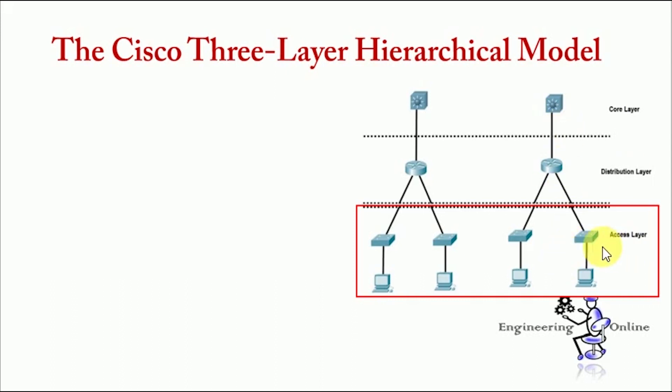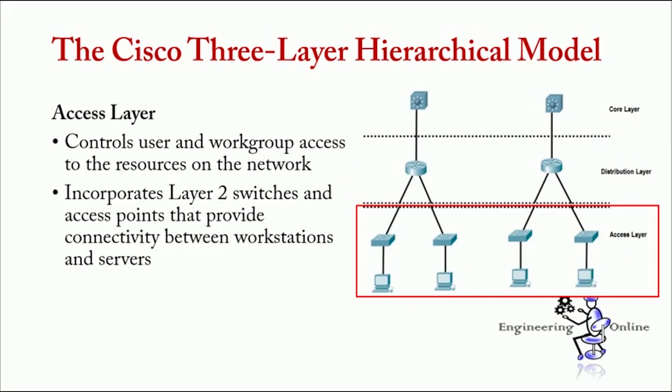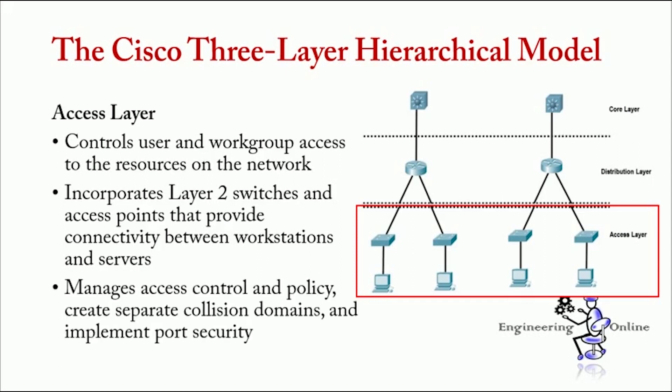There are 3 layers. First one is access layer, then distribution layer, and then core layer. First, we will discuss the access layer. Access layer controls user and workgroup access to the resources on the network. This layer usually incorporates layer-two switches, and access point that provide connectivity between workstation and servers. We can manage access control and policy, create separate collision domains, and implement port security at this layer.